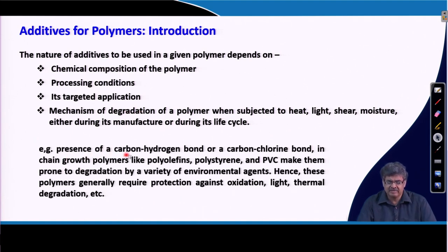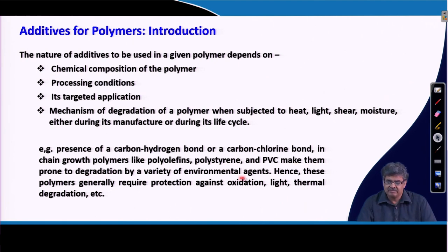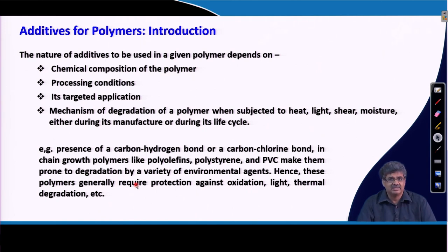For example, the presence of a carbon-hydrogen bond or a carbon-chlorine bond in chain-growth polymers like polyolefin, polystyrene, and polyvinyl chloride makes them prone to degradation by a variety of environmental agents. Hence, these polymers generally require protection against oxidation, light, and thermal degradation.